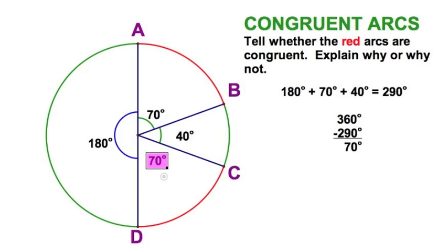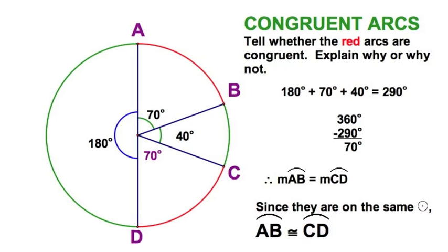This tells me that this central angle must also be 70. Since these two angles are both 70, I can conclude that the two red arcs have the same measure, because arcs that have the same measure are congruent. But there's one thing more. Since these arcs are actually on the same circle, I can extend that to say that the two arcs are congruent.